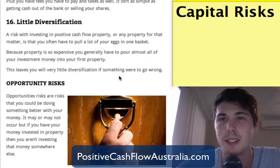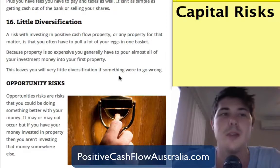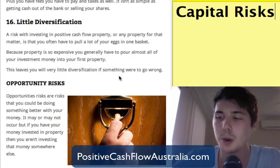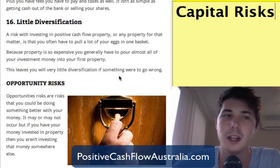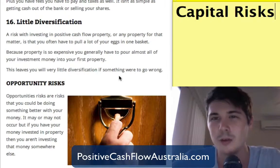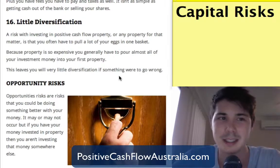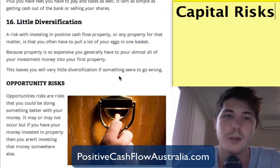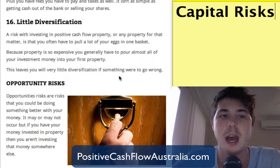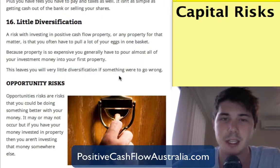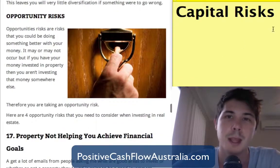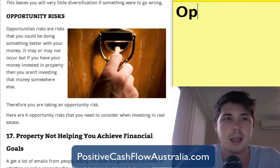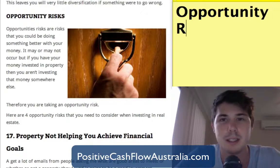The other capital risk is number sixteen: because property is so expensive, you're likely to have little diversification, especially when you're getting started. Because you're putting all of your eggs in one basket to afford to buy the property, it leaves you little diversification if something were to go wrong.